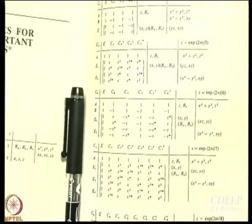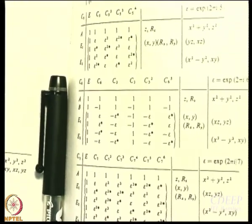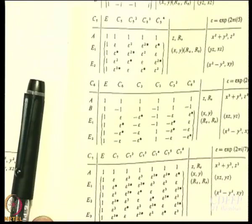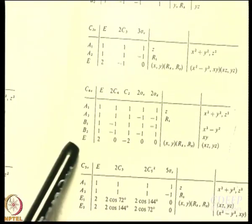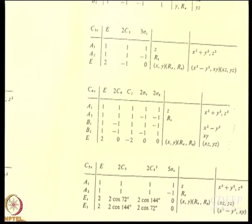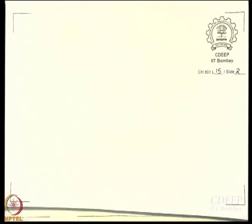Let us take a character table — any character table. Which character table do you like? Let us say C4V. Now suppose I use XYZ as a basis — does it describe everything? It only gives you an idea of E and A1 symmetry species. So we want to study IR activity and Raman activity.